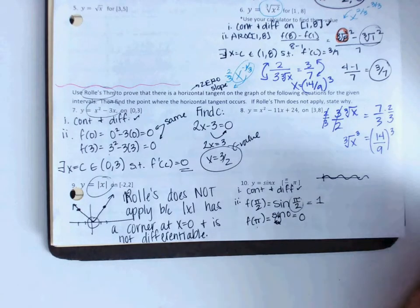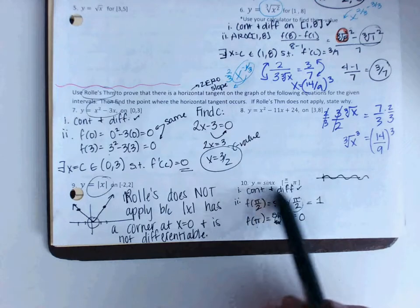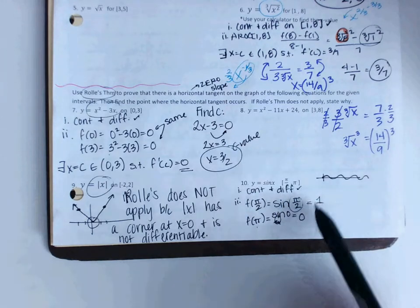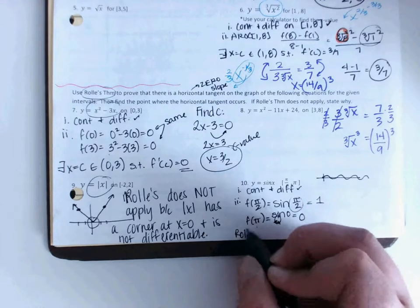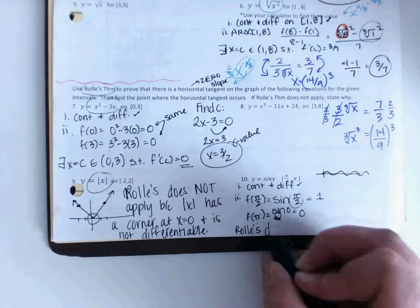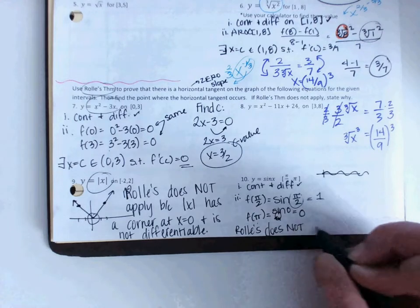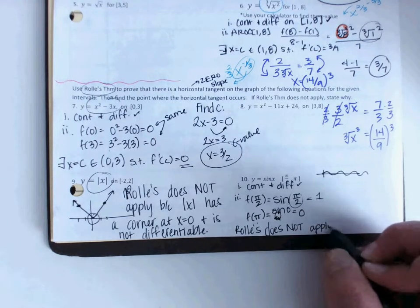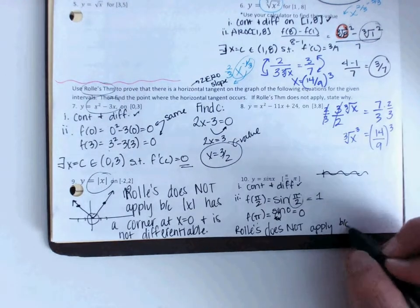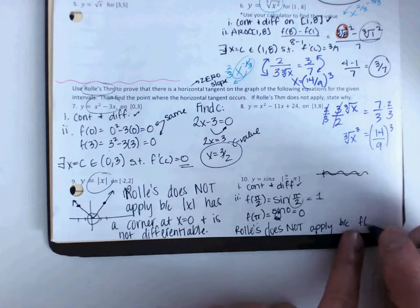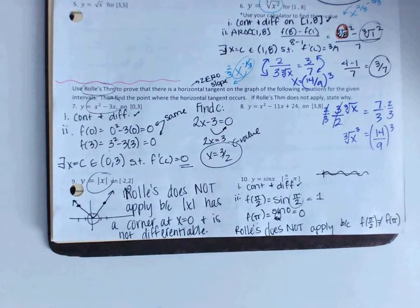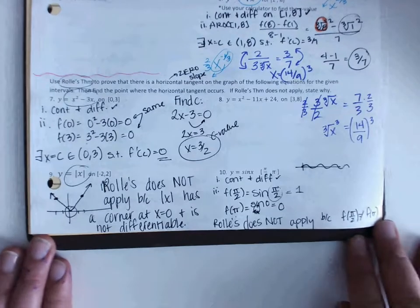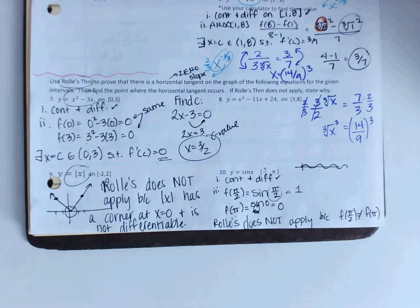Now, remember, for Rolle's theorem, continuous and differentiable, but these guys had to match. So since they do not match, I would say Rolle's does not apply because f of pi halves did not come out equal to f of pi. And remember, you can only use Rolle's if those endpoints came out to be the same with each other.